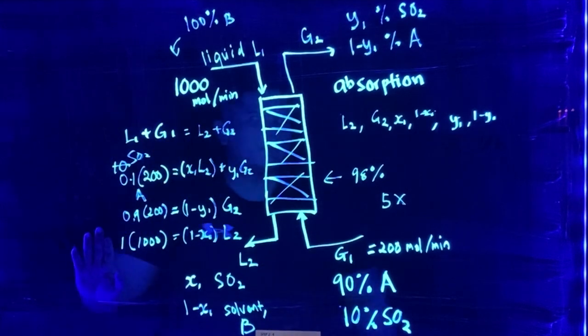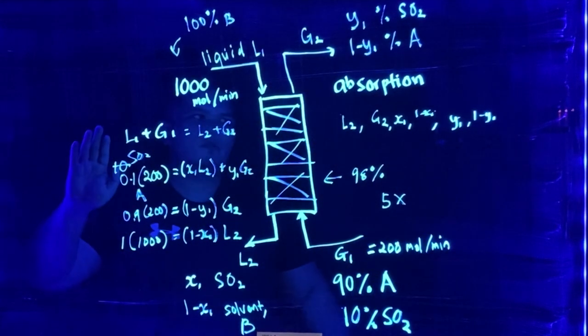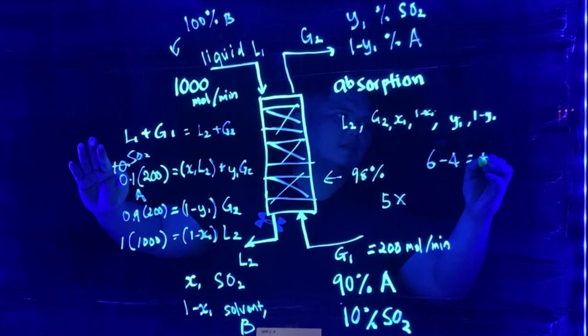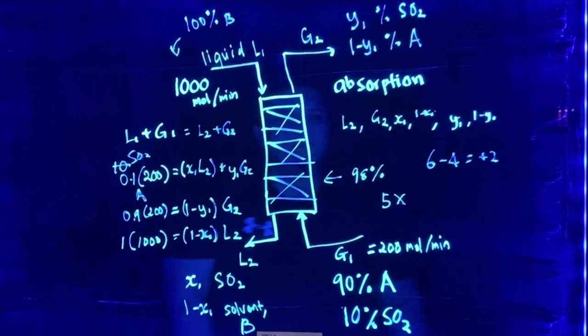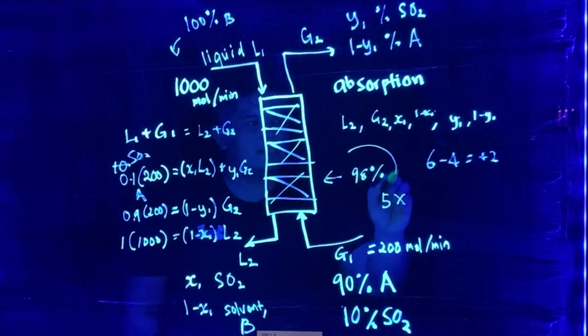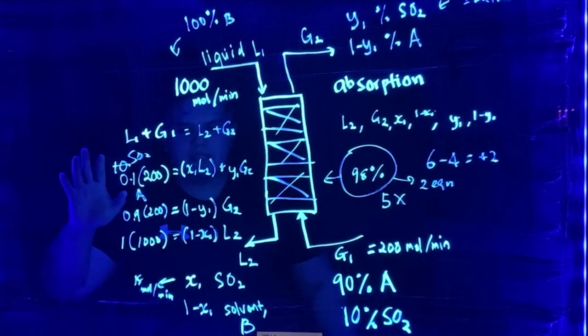So now we have 4 equations here. We have 6 unknowns equation. So 6 minus 4, we got positive 2 which is still underspecified. So where do we get the remaining equation? This is where we get from 98% of column efficiency. So now you have all this equation. Then you should be able to solve this particular problem.